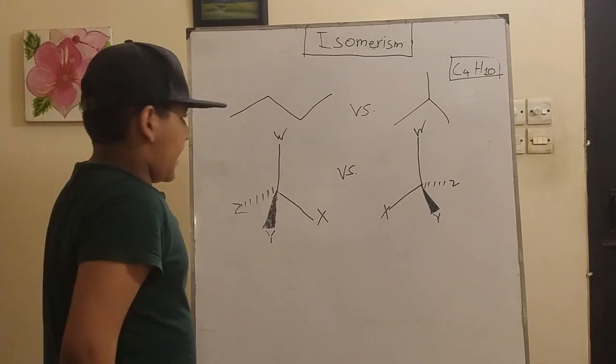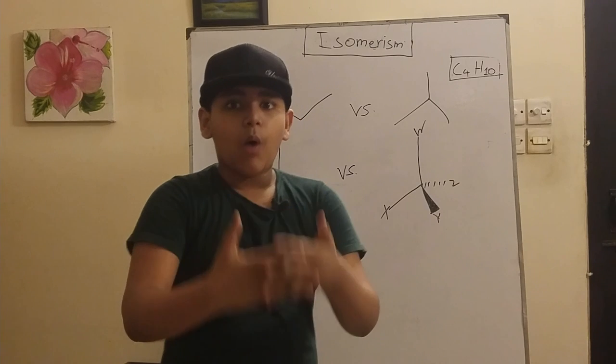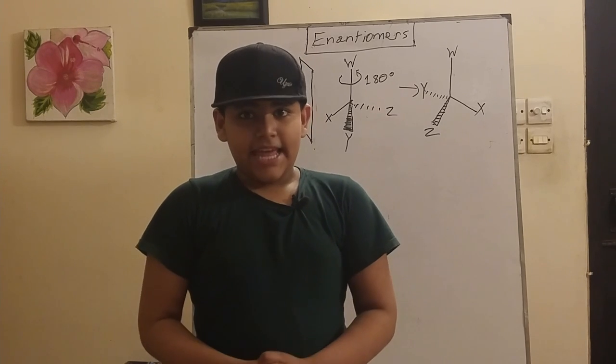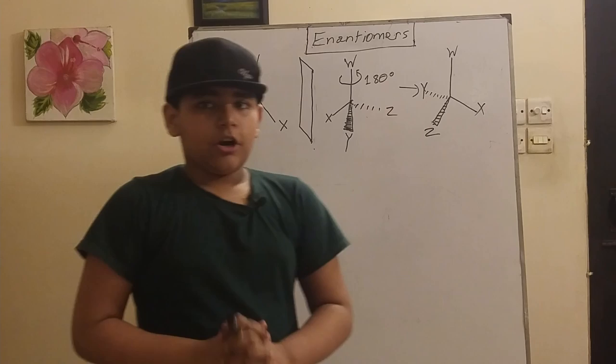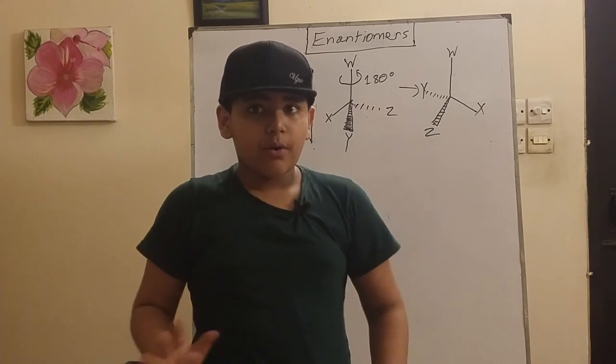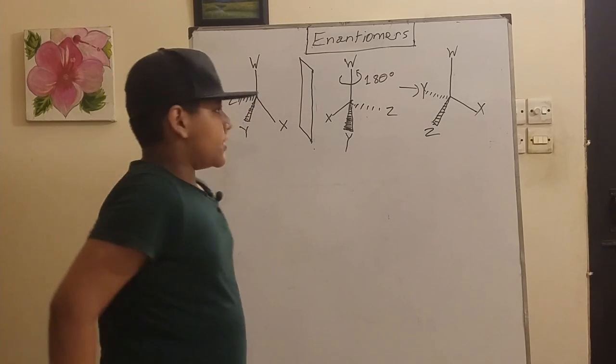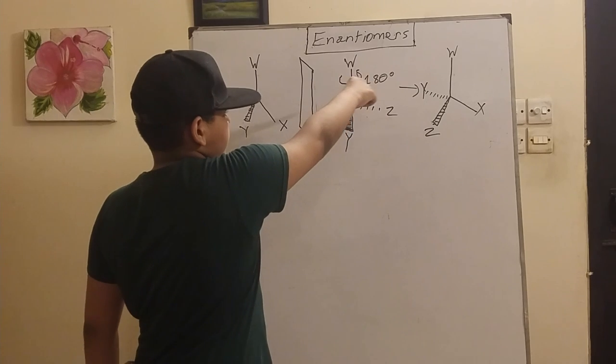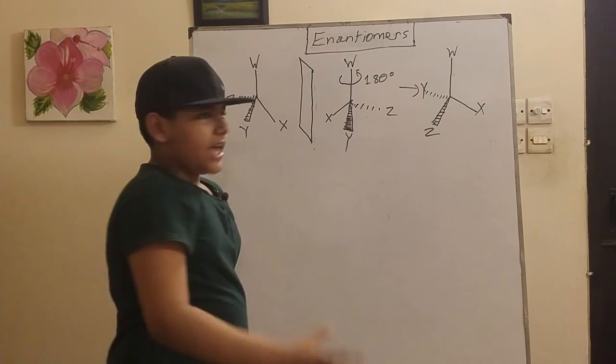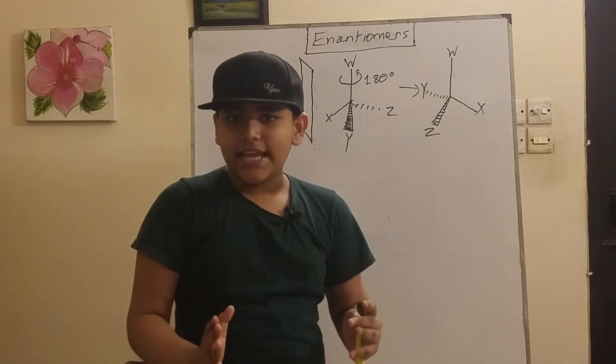Now let's talk about enantiomers. Enantiomers are molecules that are non-superposable mirror images of each other. So they are stereoisomers, but when you take the mirror image of it and rotate it 180 degrees and try to overlap the result with the original, they're not the same because they do not overlap properly.